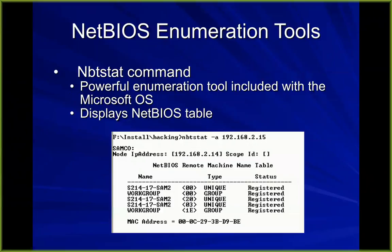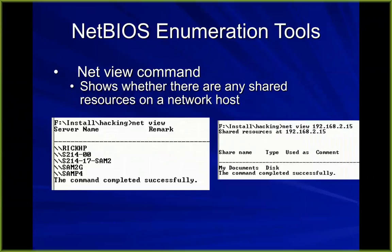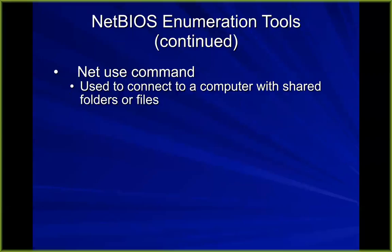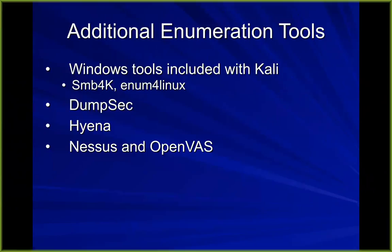You can use NBT stats to see a list of machines on your network and whether they're file servers. You can use net view to show whether there are shared resources on a host — it'll show you the server and what they're sharing, and then you can use net view with an IP address to see shared folders. There are other enumeration tools included with Kali like SMB4K and Enum4Linux, and vulnerability scanners that include enumeration steps like Hyena, Nessus, and OpenVAS.